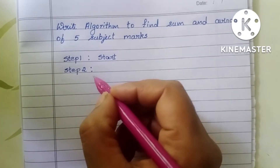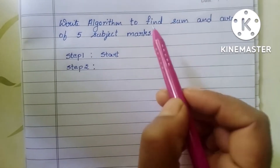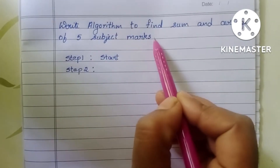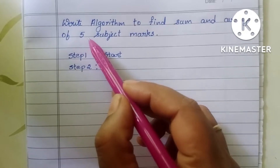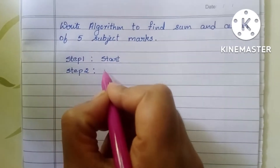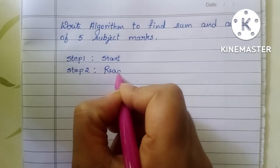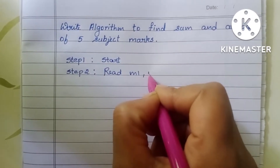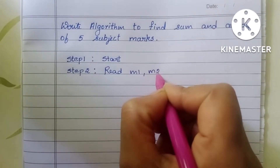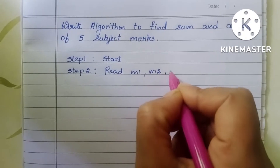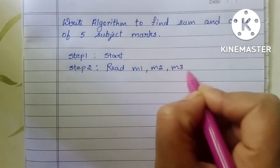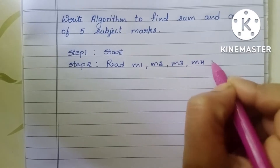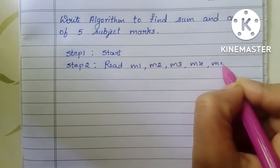In step two, we have to read the input. To find sum and average of five subject marks, we need to read five subject marks: m1 is the mark of subject one, m2 is the second subject mark, m3 is the third subject mark, m4 is the fourth subject mark, and m5 is the fifth subject mark.